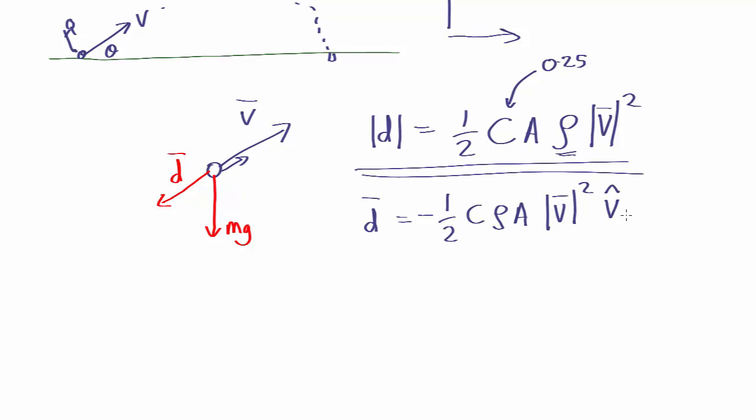So when you multiply it by that it has the right strength and a minus sign means it's going to point in this direction. So that is in vector terms how you work out the force due to drag.